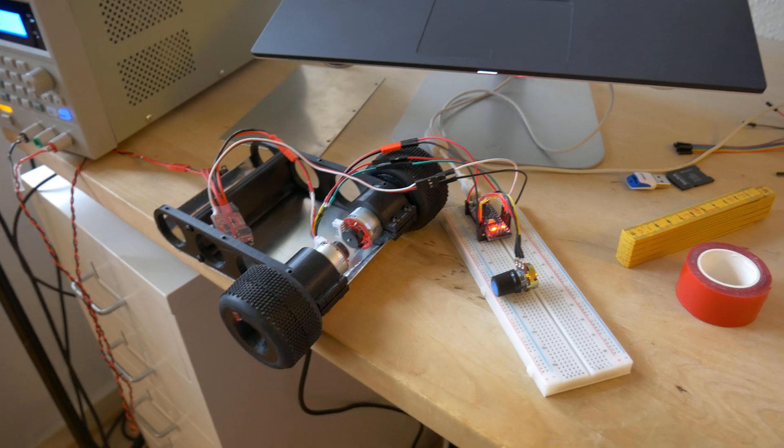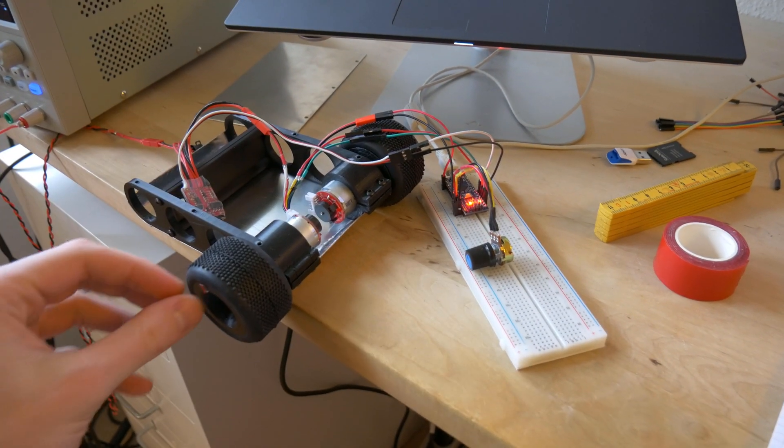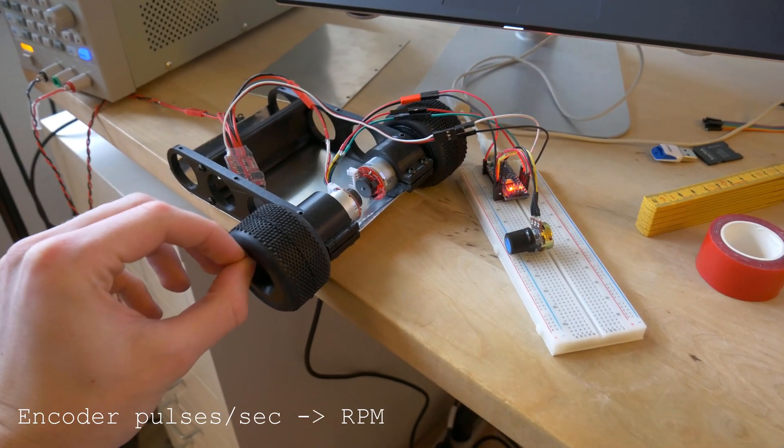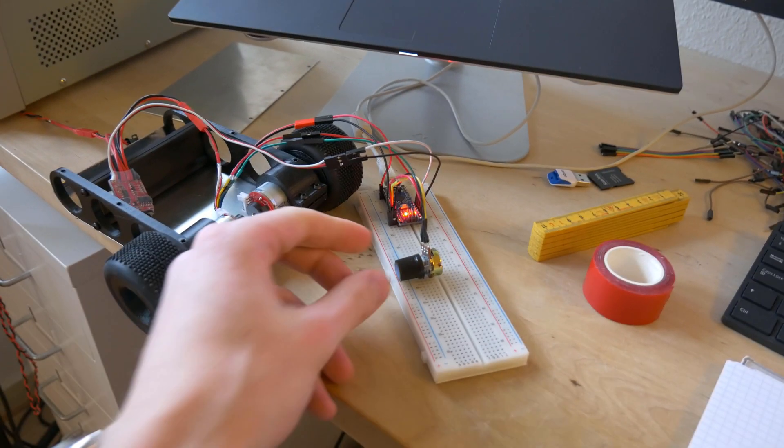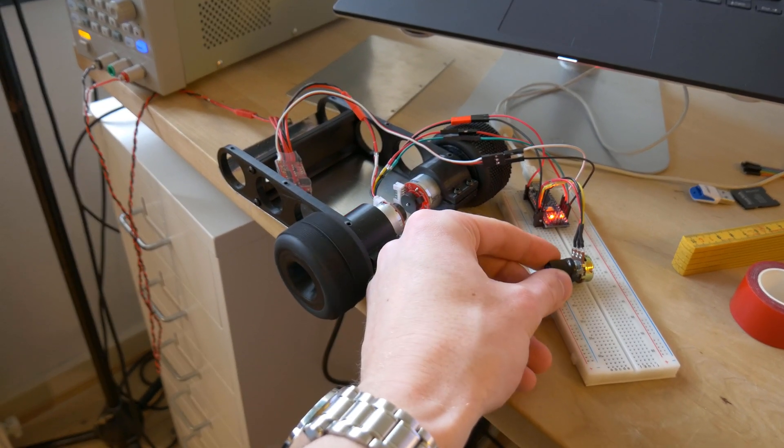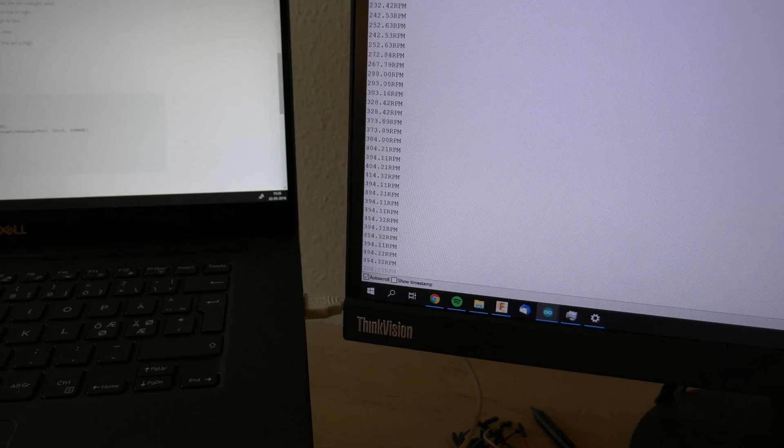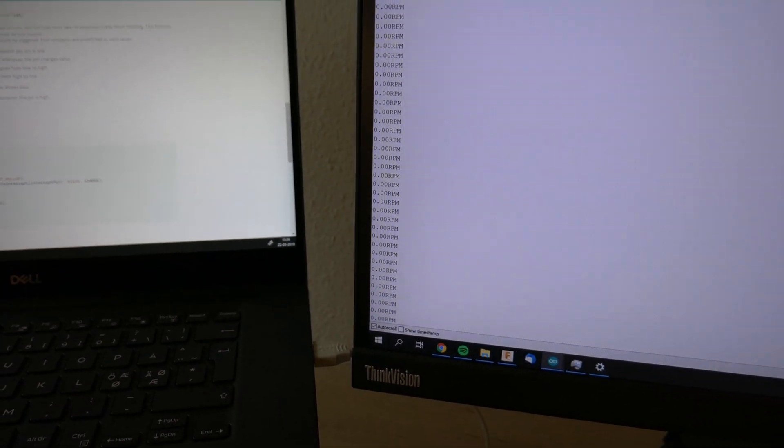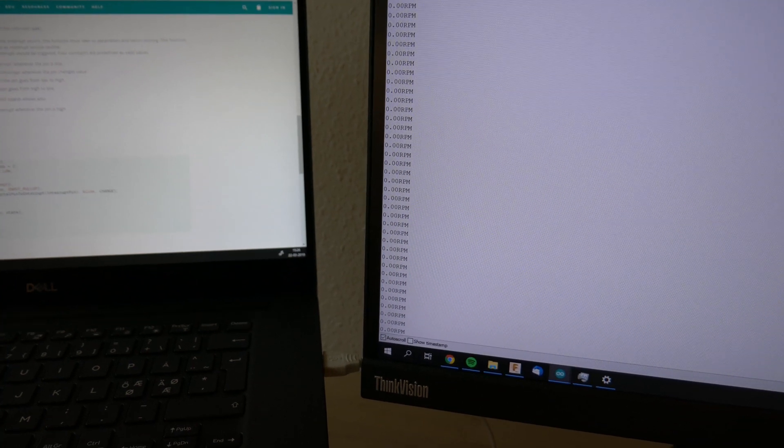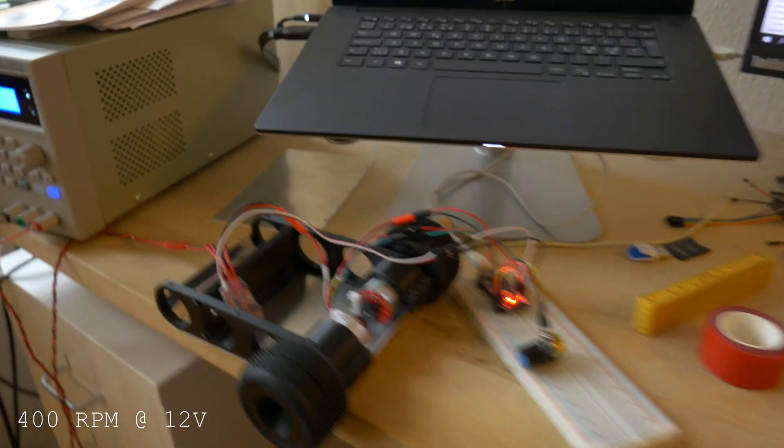Here is a quick update. I have now written some code that reads the encoder and translates it to an RPM count. So when I turn this potentiometer, the motor turns. And when I give full throttle you can see it says close to 400 RPM, just around 400 RPM, which is also the spec for the motor at 12 volts.